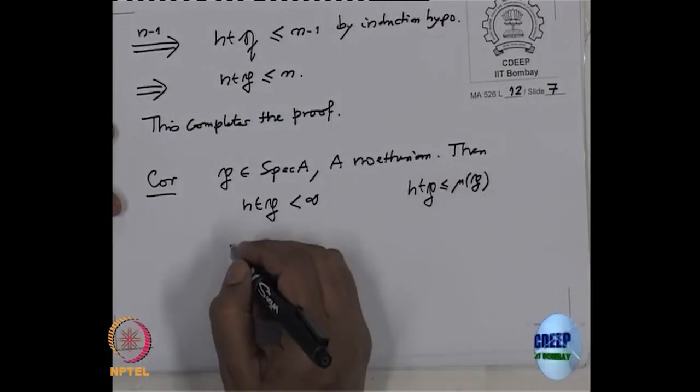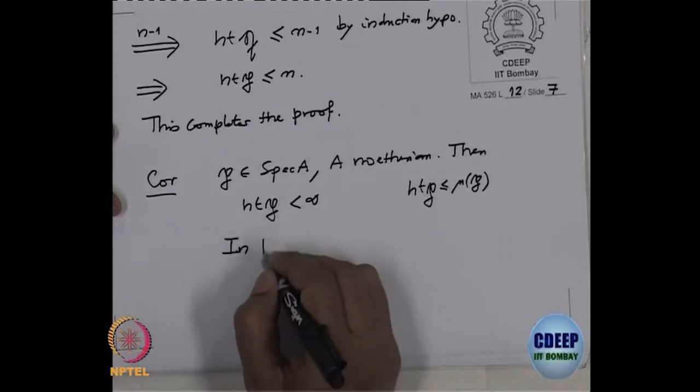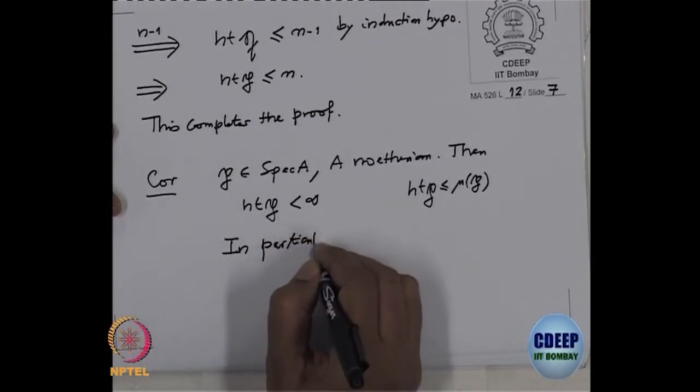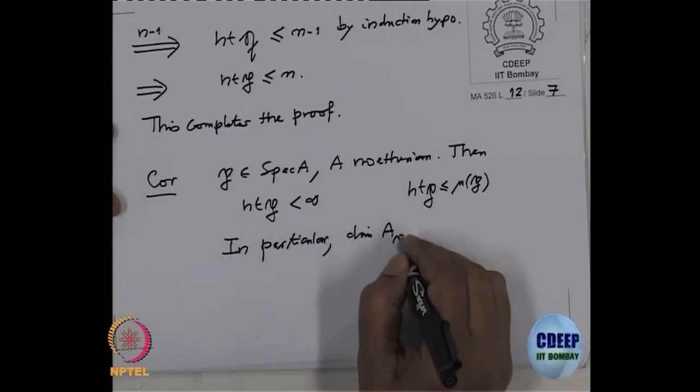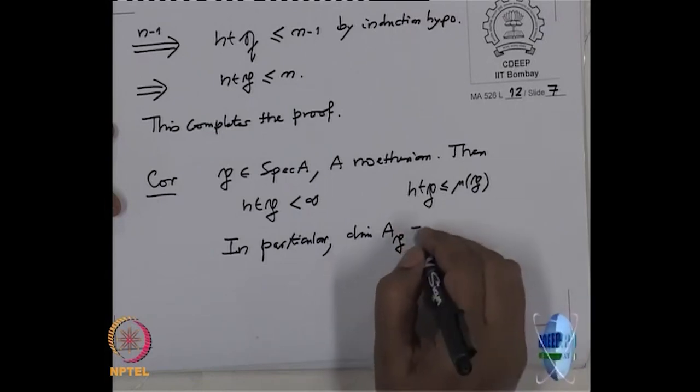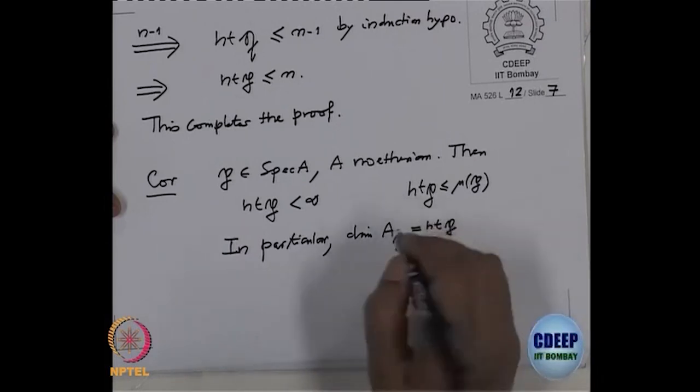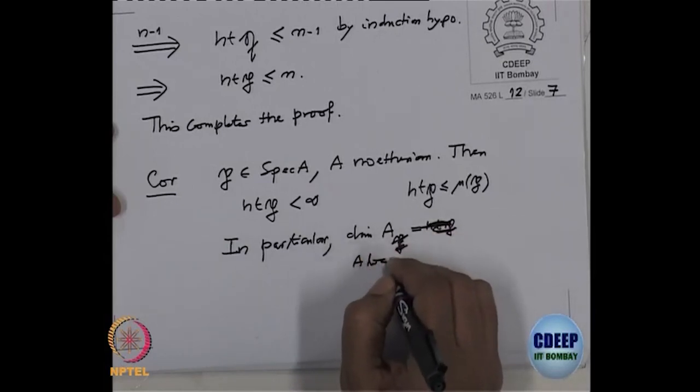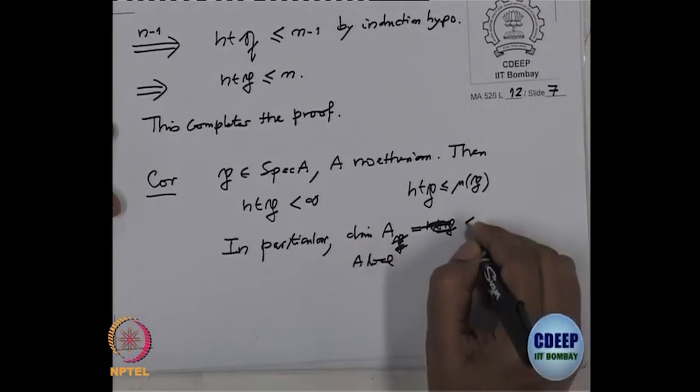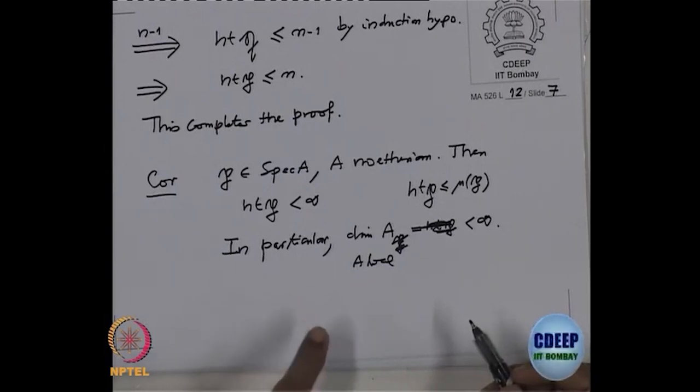So therefore, in particular, dimension of a local ring, which is height of P... No, in general actually dimension of a local ring is finite. The dimension theorem guaranteed this because it's the degree of the Hilbert Samuel polynomial.